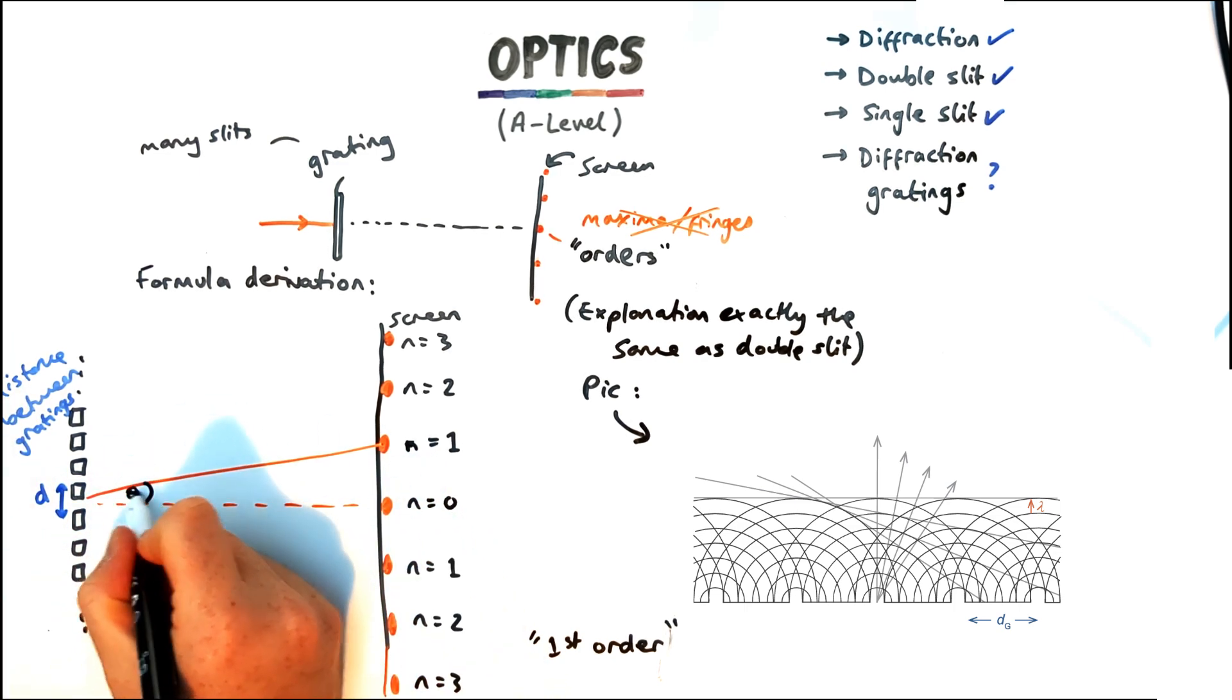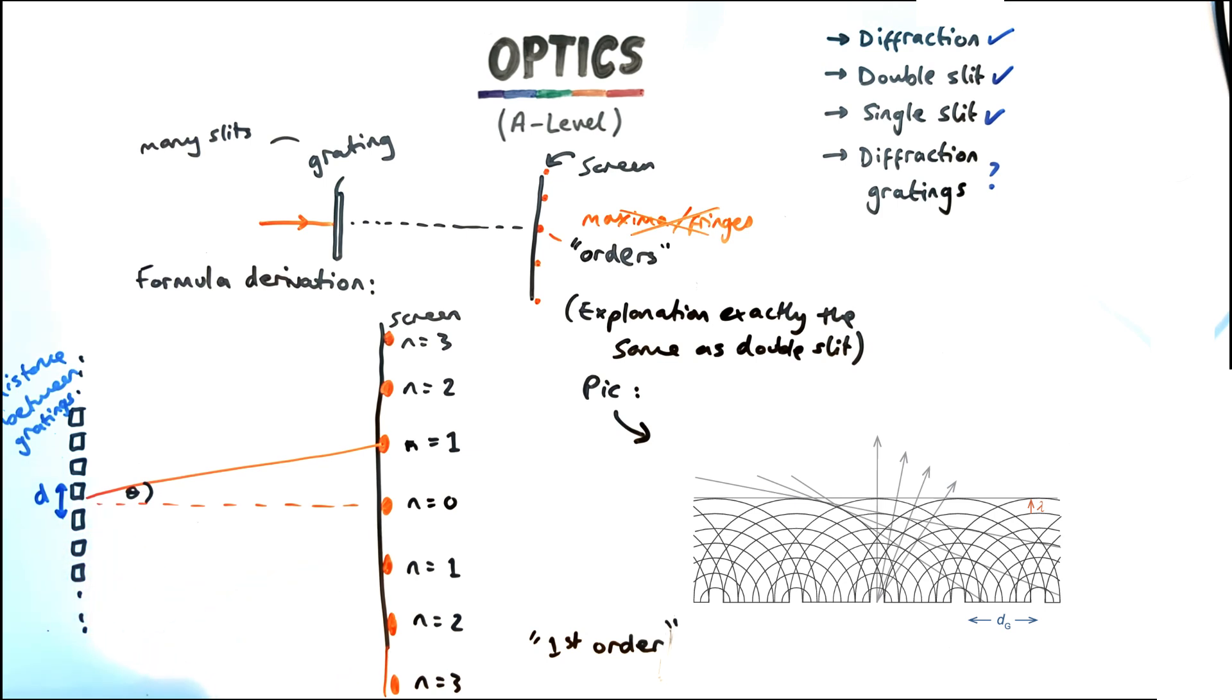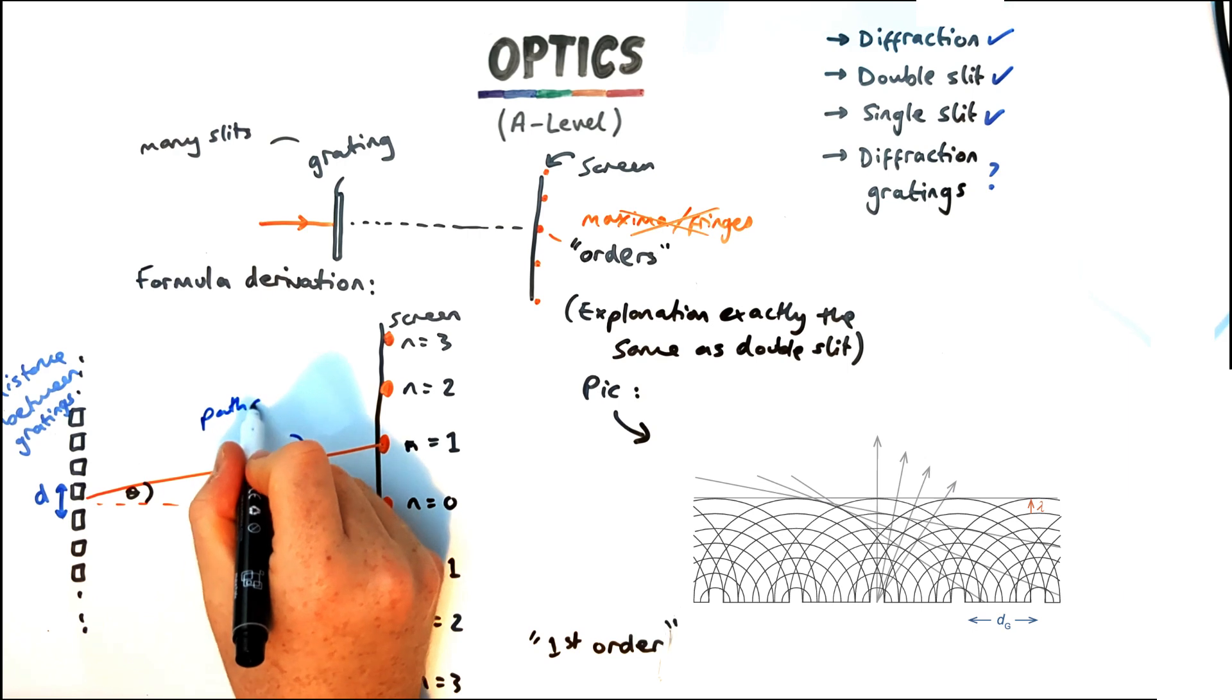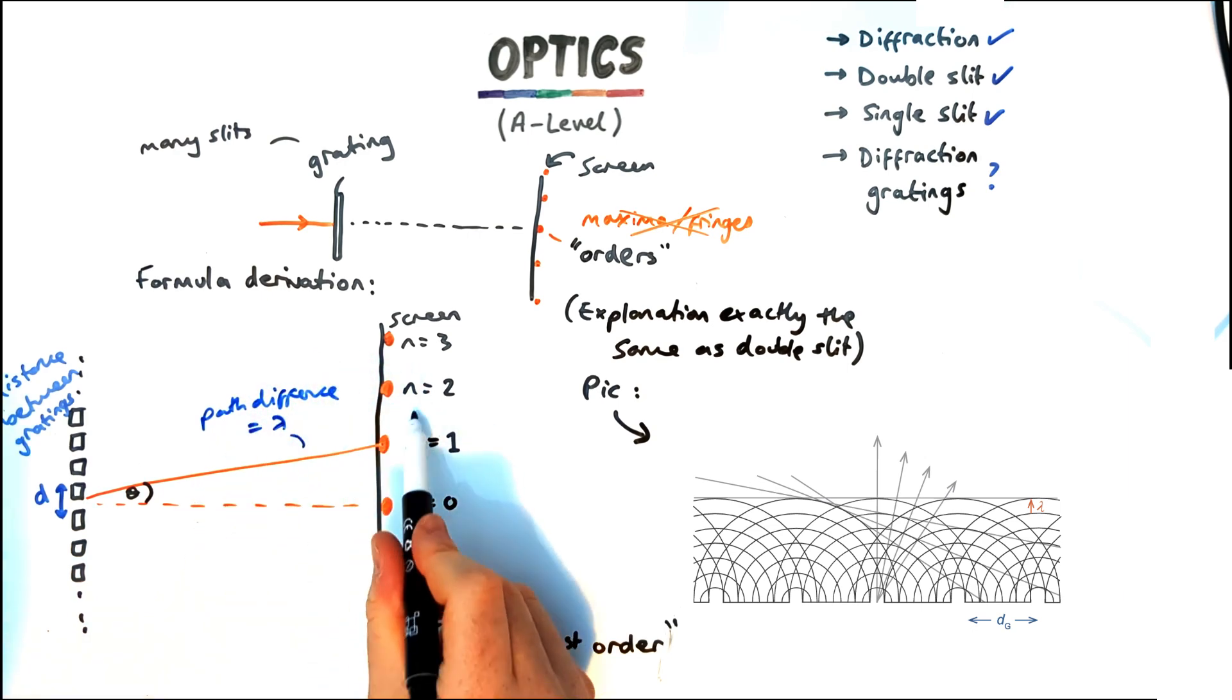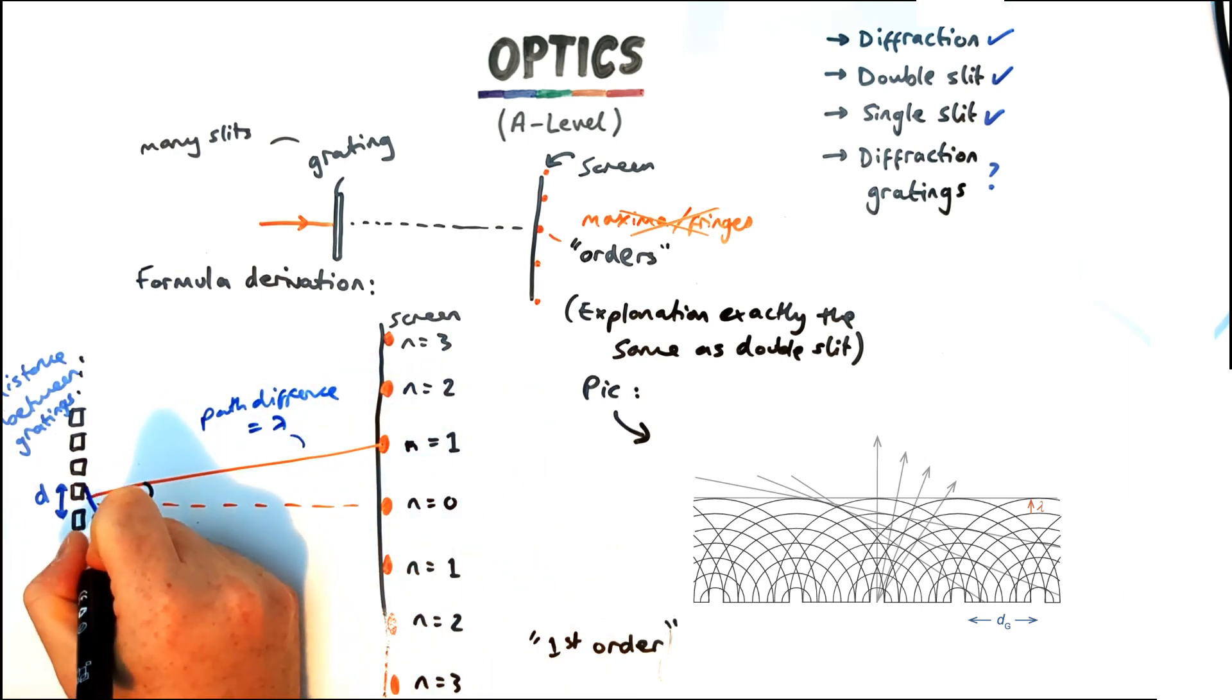Now just like with the previous derivation we're only focusing on that first fringe, that first order here initially. Now when we're looking at the first order that means that the path difference between one ray from one grating to the next has to be one wavelength. If it was the second order it'd be two whole wavelengths but they have to be in phase so it's one wavelength.